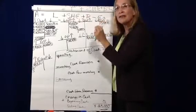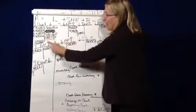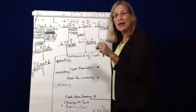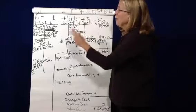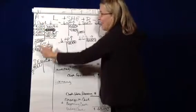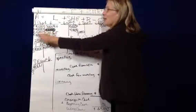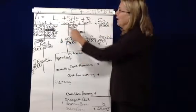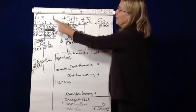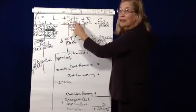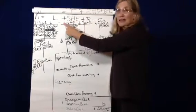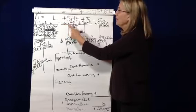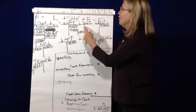And I have created what we call T-accounts to keep the information organized. And what we're going to do is if it's an asset, it's going to be increased by the left side and decreased by the right side. If it's on the other side of the equation, then it's going to be increased by the right side and decreased by the left side. So if it's a liability or a stockholders'